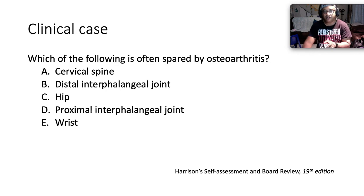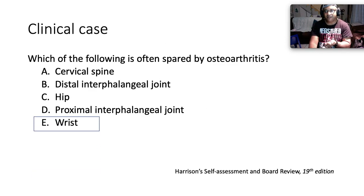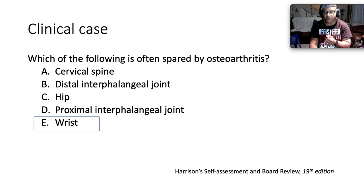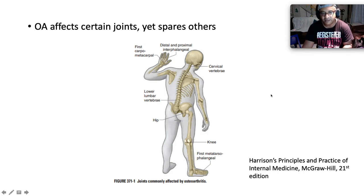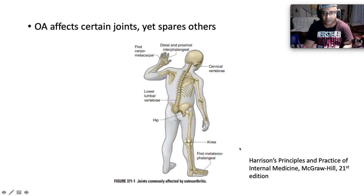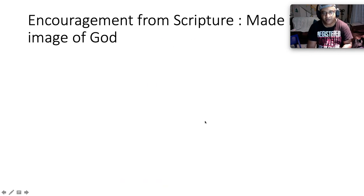Back to our clinical question: which of the following is often spared by osteoarthritis? The answer is the wrist. Inflammatory arthritis like rheumatoid arthritis loves the wrist, but the wrist is not commonly involved in osteoarthritis. OA involves the DIP and PIP — Bouchard's and Heberden's nodes — the first carpometacarpal, the C-spine, the lower lumbar spine, the hips, the knees, and the first metatarsophalangeal joint. Not the wrist.